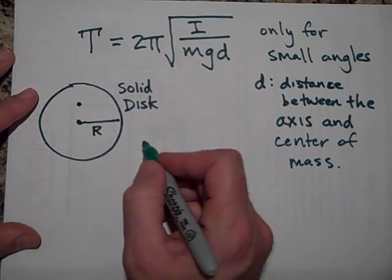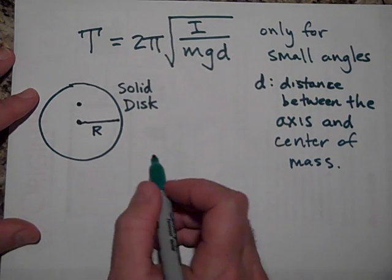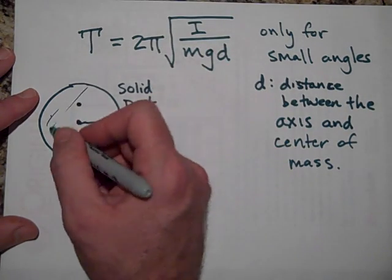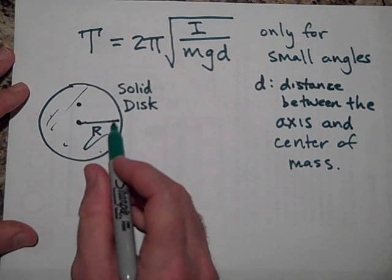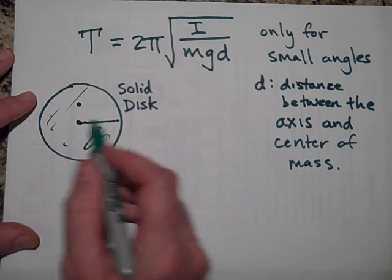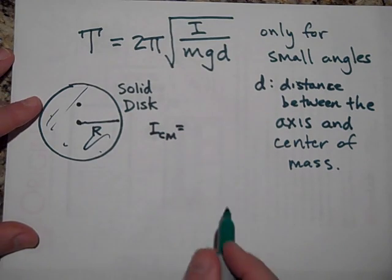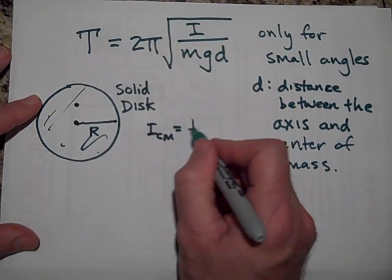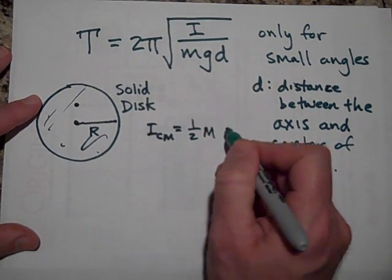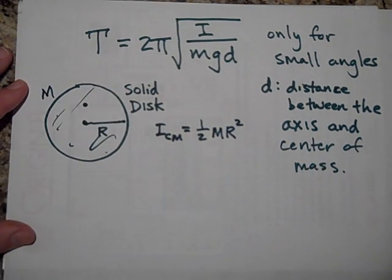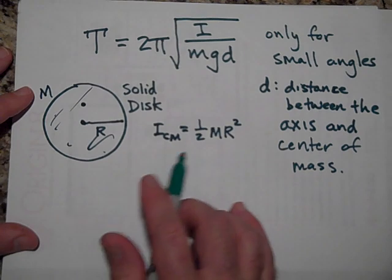So the period is going to be, well, first of all, we need to get the I. So now the I for, if this is a solid disk, the I for the disk, at, through the center of mass, if you look on your table, it's one half MR squared, M times R squared. By the way, this has a mass M. So it's one half MR squared now.